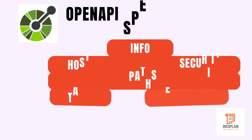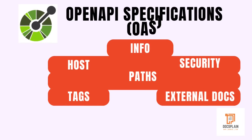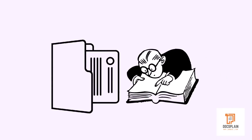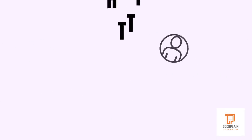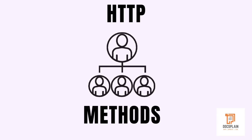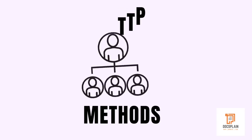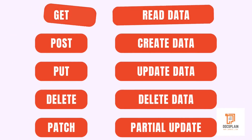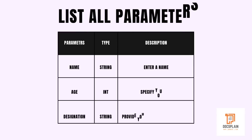An API reference is created from Open API Specifications, or OAS. It is either automatically generated from the code base, or you need to skim through the code to create one. The OAS follows a structure that includes HTTP methods such as GET, POST, PUT, DELETE, and PATCH. You will be documenting them using a well-defined tabular structure that enlists a function's parameters, their data type, and descriptions.